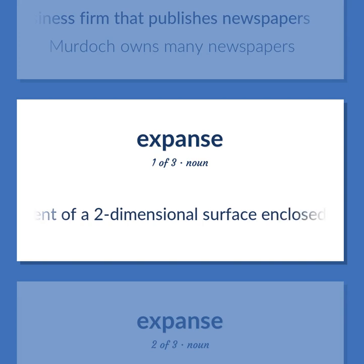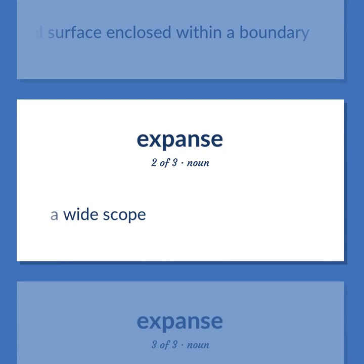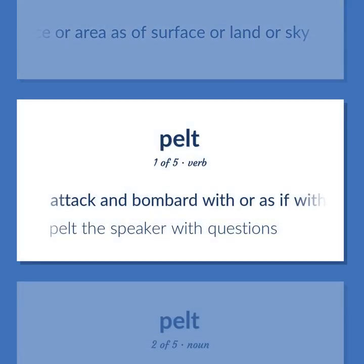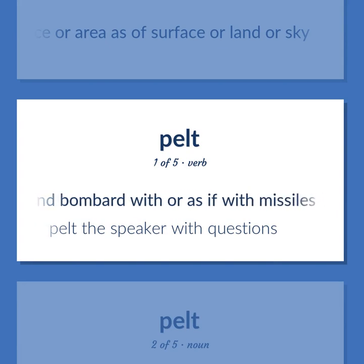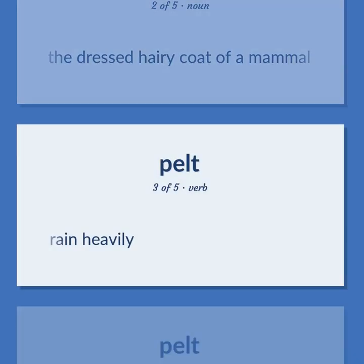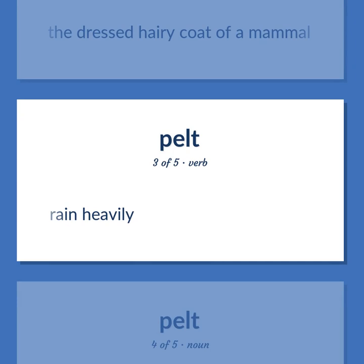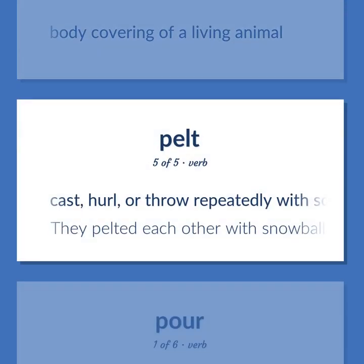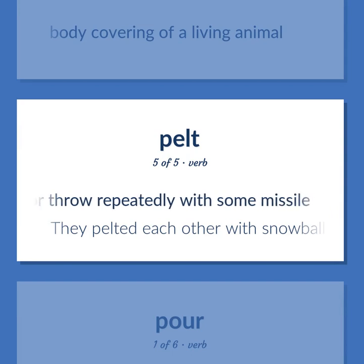Area. The extent of a two-dimensional surface enclosed within a boundary. A wide scope. A wide and open space or area as of surface or land or sky. Pelt. Attack and bombard with or as if with missiles — pelt the speaker with questions. The dressed hairy coat of a mammal. Cast, hurl, or throw repeatedly with some missile — they pelted each other with snowballs.